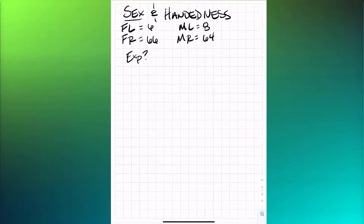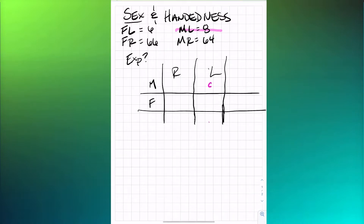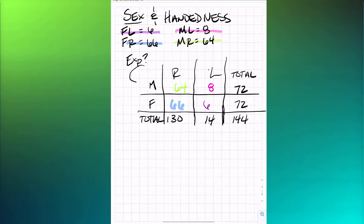The raw data presented includes females that are left-handed, males that are left-handed, females that are right-handed, and males that are right-handed. Handedness goes into the columns. Males who are left-handed is 8, males who are right-handed is 64, females who are left-handed is 6, and females who are right-handed is 66. The totals make up the outer portion of the contingency table. Everything entered so far is called an observed count, and that grand total in the bottom right-hand corner is our sample size, denoted with lowercase n.